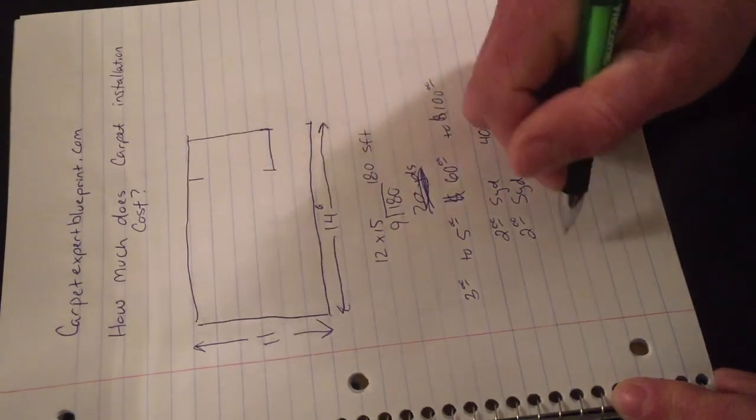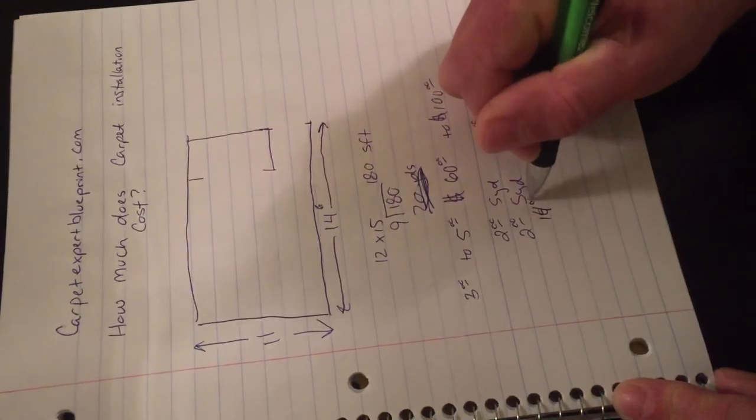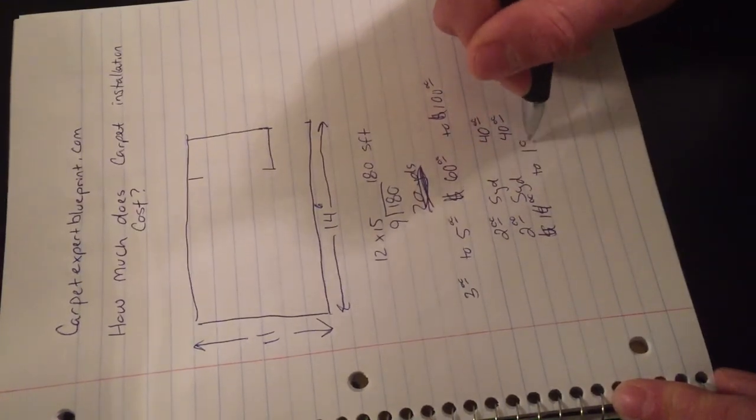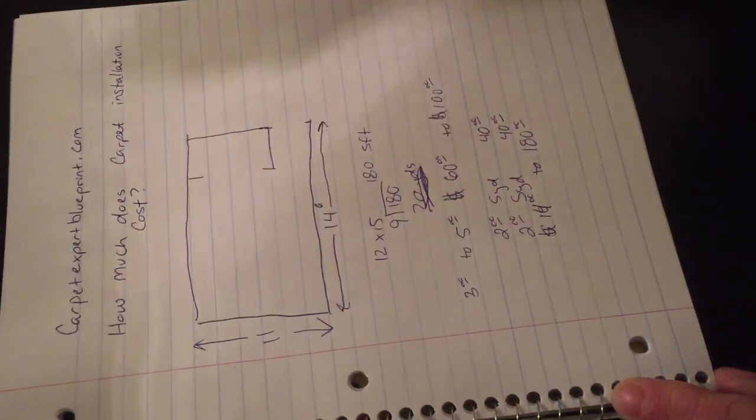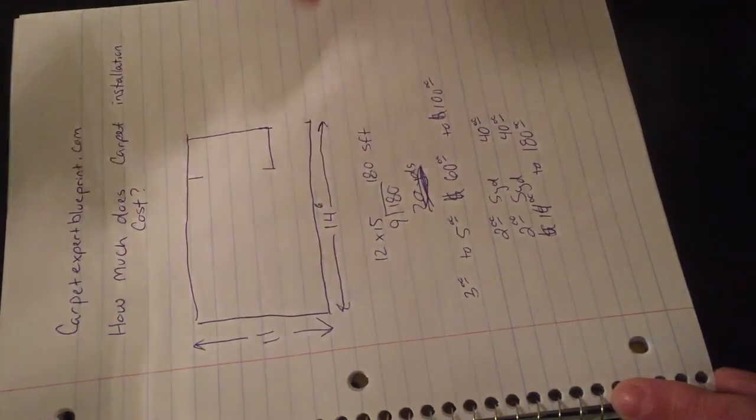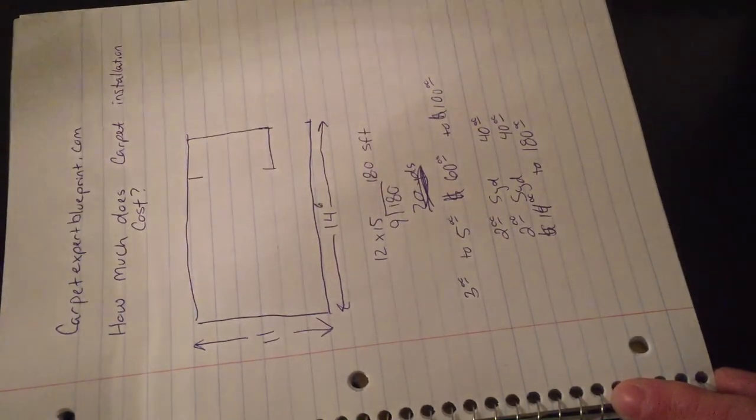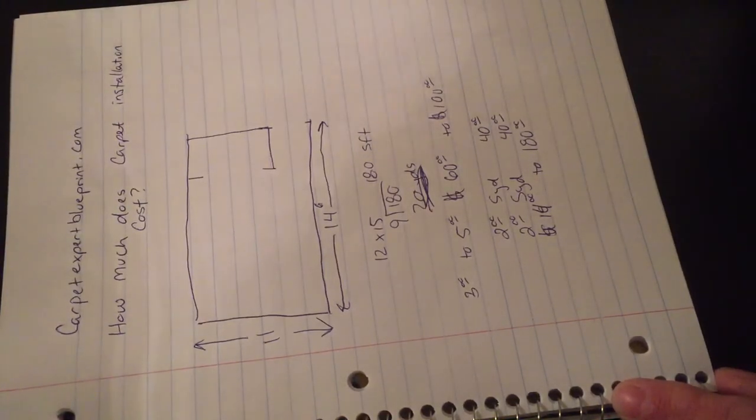So this installation can run anywhere from $140 to $180 for one room of installation. And basically any other rooms that you have in your house, just use this diagram here to put the formula together and get a basic idea of what you could expect to pay, that way if an installer shows up and tries to pull a fast one on you and tries to upcharge you, you kind of have an idea of where you need to be.